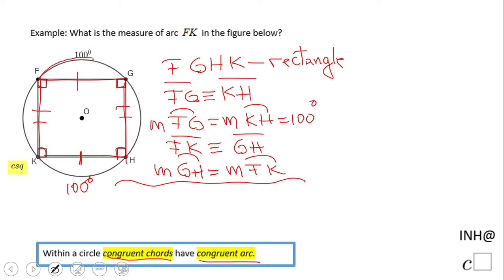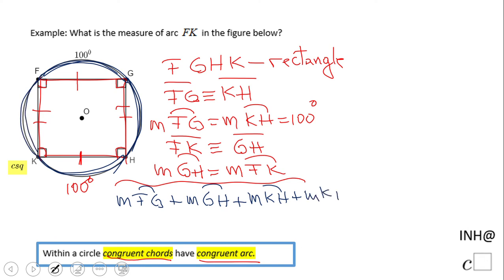We're gonna go around the circle and we have the measure of arc FG plus the measure of arc GH plus the measure of arc KH plus the last one, arc KF. If we add those arcs, we get the whole circle, which needs to be 360.